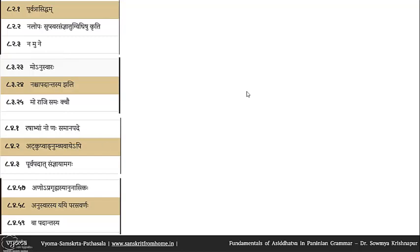The highlighted sutras are: purvatrasidham as the adhikara; nashtapadantasya jali where an apadanta nakara is converted to anuswara when followed by jhal; atkupvagnum vyavayapi, the natva sutra, where if there is repha or shakara and nakara separated by atkupvagnum the nakara is converted to nakara; and anuswarasya yai parasavarnaha, where anuswara followed by a yai letter is converted to parasavarana.